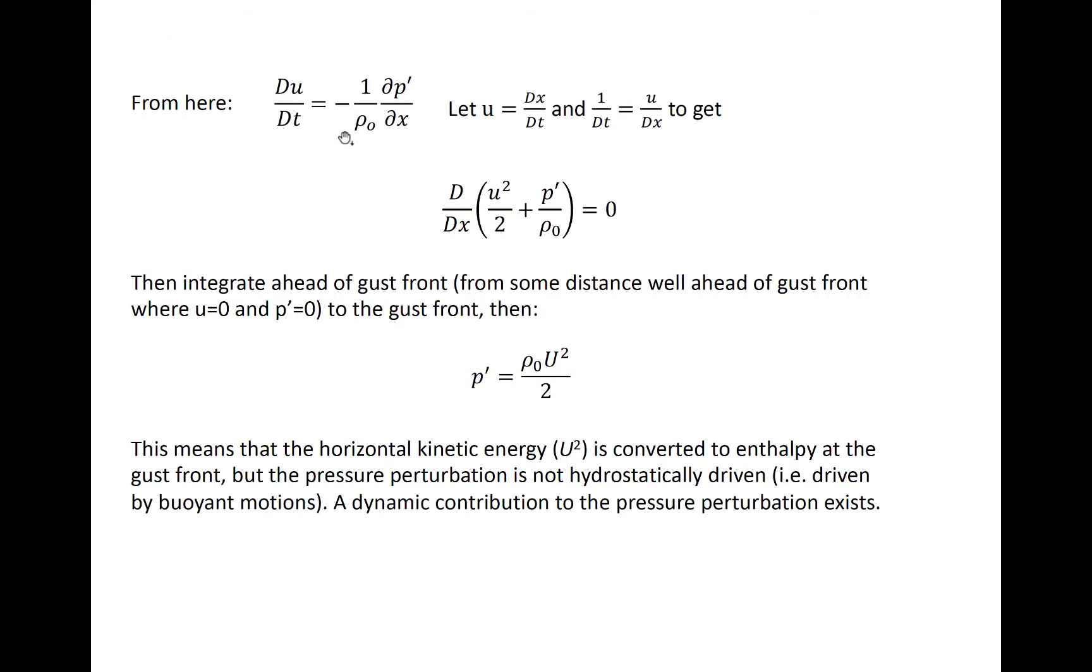We can also manipulate the horizontal momentum equation to show that following the trajectory of a parcel in the cold pool, the sum of the kinetic energy associated with motion and enthalpy are conserved. If we integrate along x this equation to some distance well ahead of the cold pool where the ambient flow is toward the cold pool at velocity U, and from a point immediately ahead of the gust front, we find that the pressure perturbation results from conversion of kinetic energy to enthalpy.